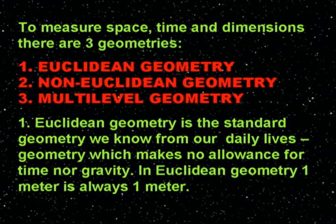Euclidean Geometry is the standard geometry we know from our daily lives — geometry which makes no allowance for time nor gravity. In Euclidean Geometry, one meter is always one meter.